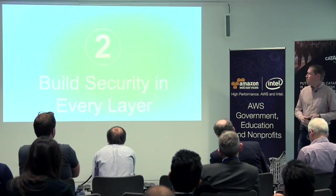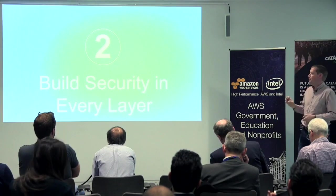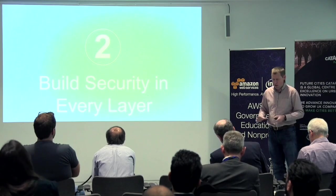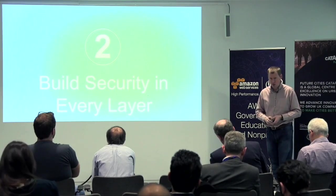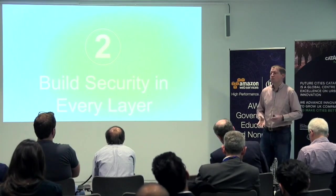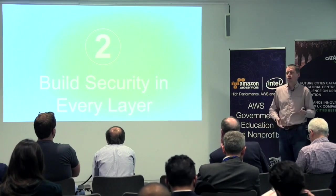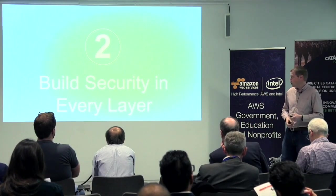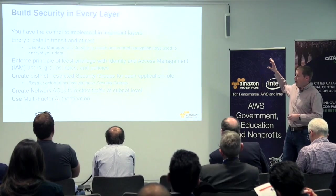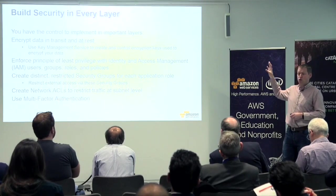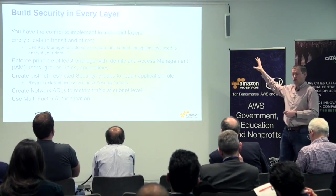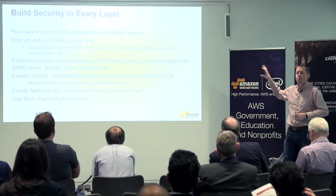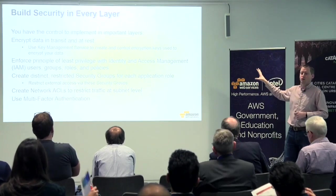Number two, build security into every layer. This is probably one of the key points about AWS. At AWS, we always say security is job zero — it's the most important thing. Building trust in our platform and giving people the ability to deploy secure workloads is critical. We have a lot of tools — many of the services you saw on the service map are around either security or management of that security capability.